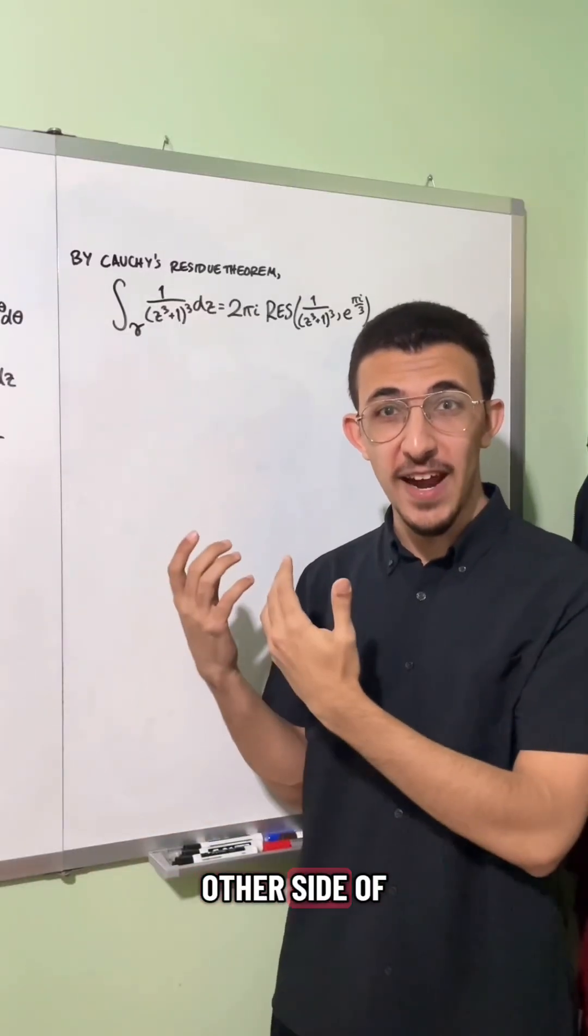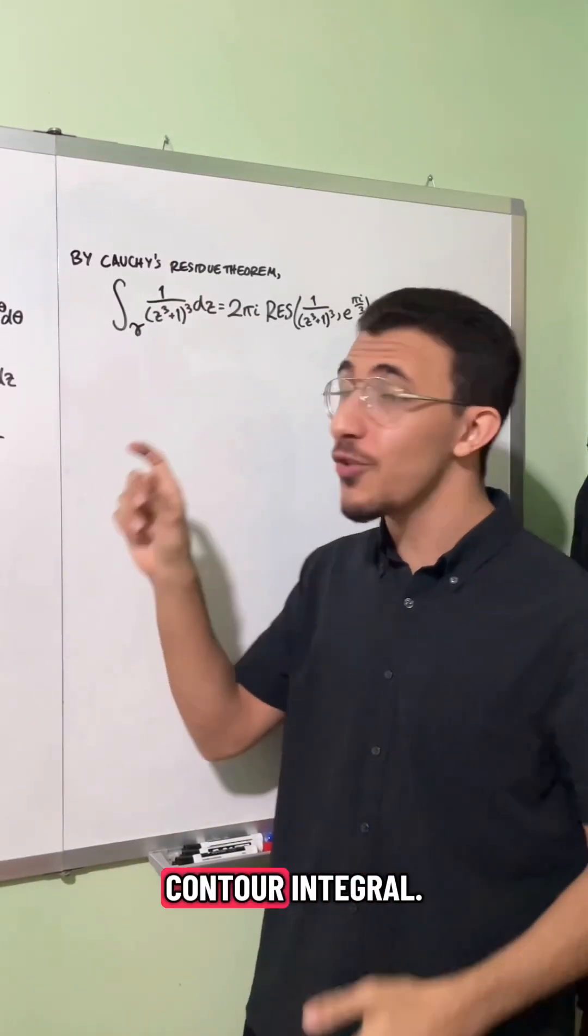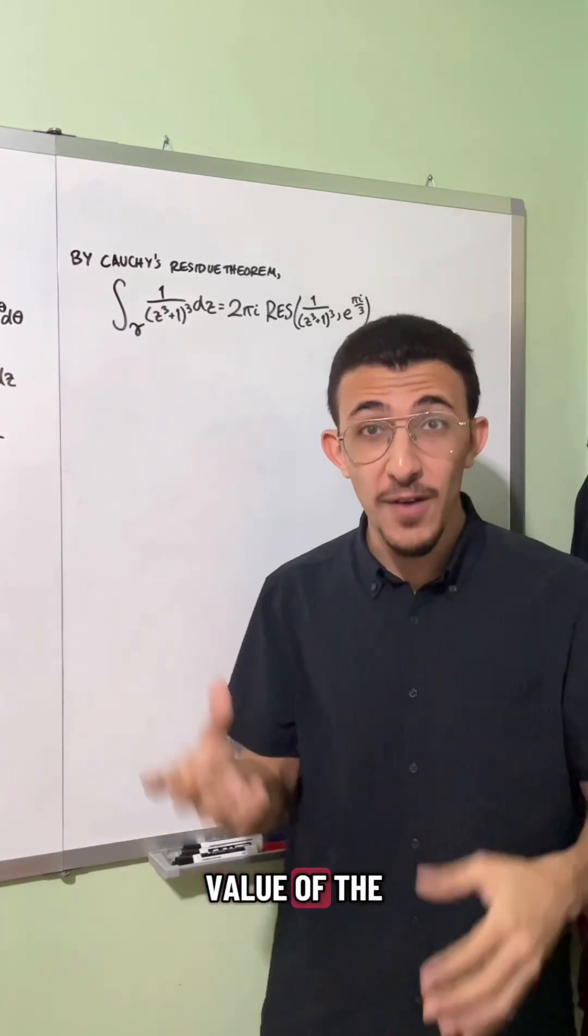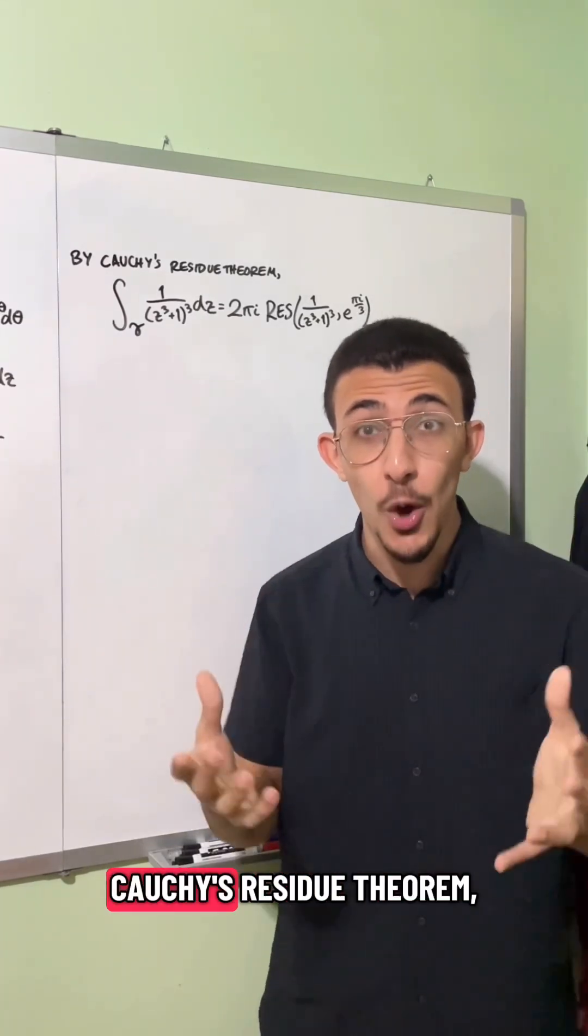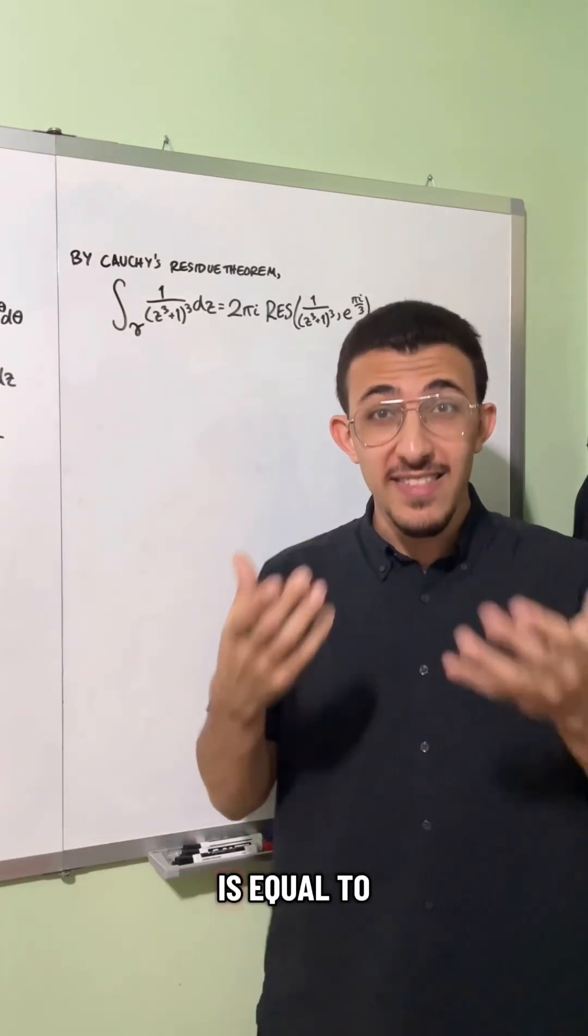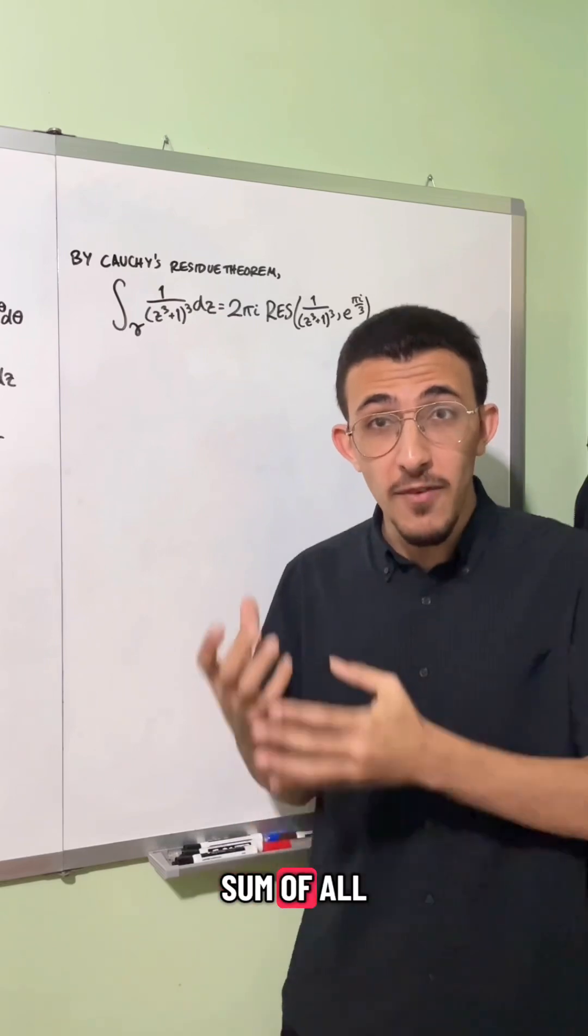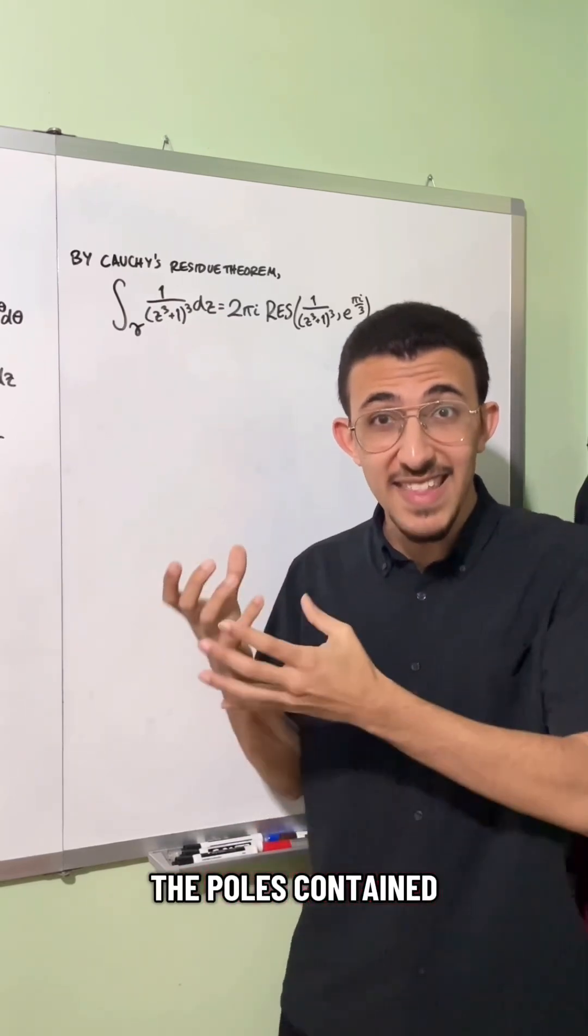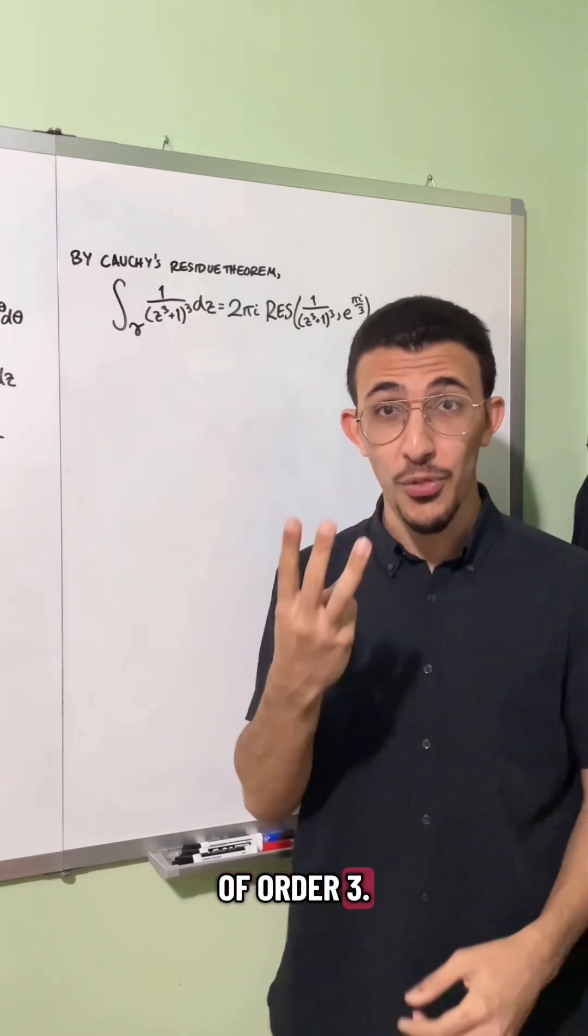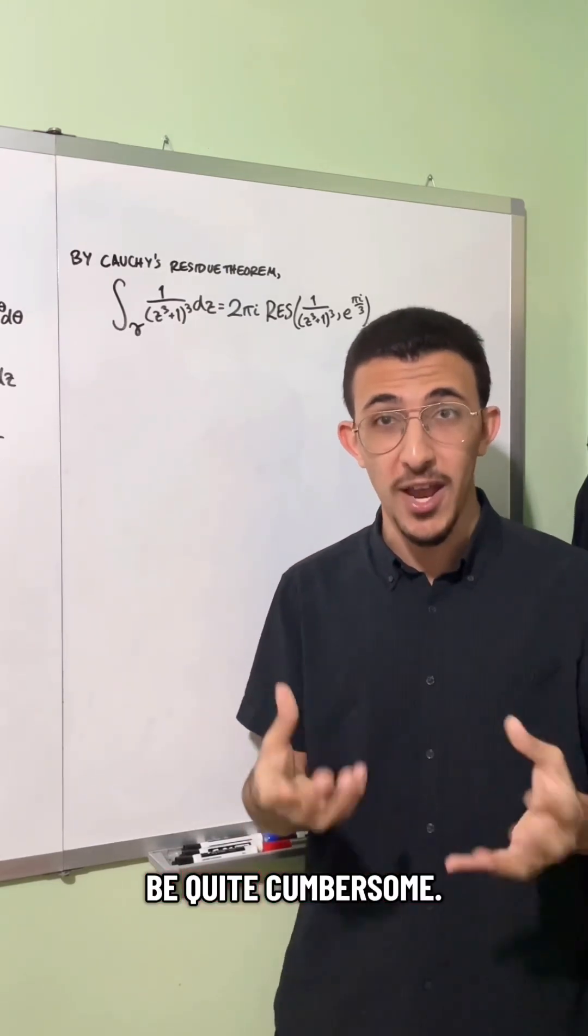So now we've come to the other side of the board to compute the value of the contour integral. We'll combine a result from the last board with this result to get the value of the integral that we desire. So we're going to use Cauchy's residue theorem, which tells us that the value of an integral over its contour is equal to two pi i times the sum of all the residues of the poles contained inside the contour, which in this case, we only have one pole, but it is of order three. So the residue calculation is going to be quite cumbersome.